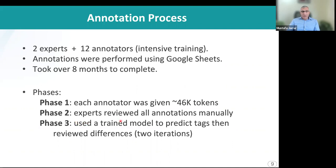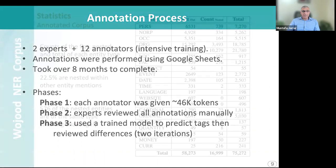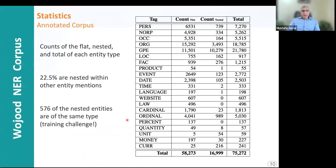The idea of the third phase was to find some missing annotations. These are the counts of each entity in the corpus, whether flat or nested.